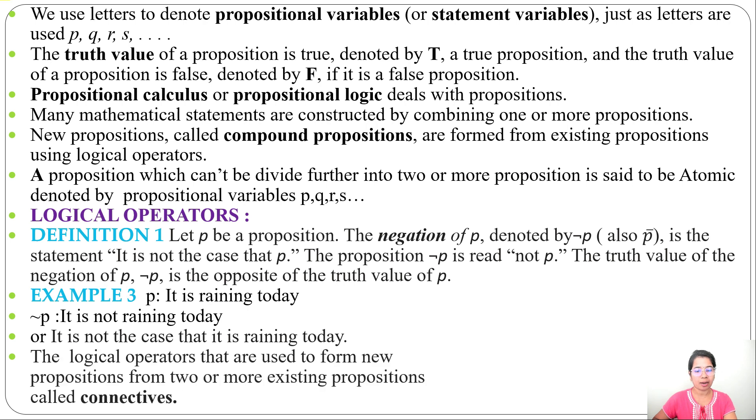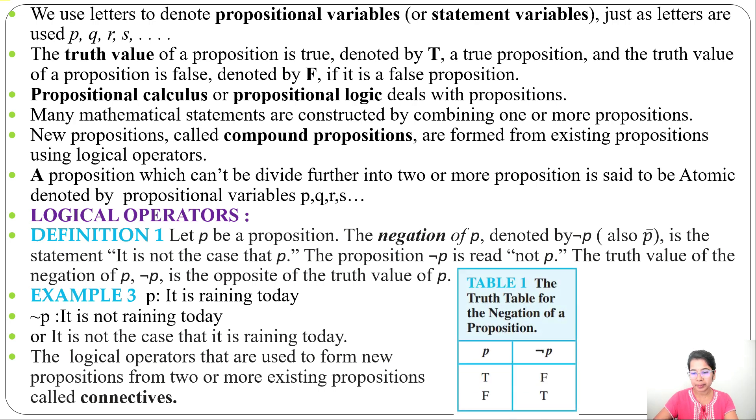There are some more logical operators that combine two or more existing propositions to form a new compound proposition - those are called connectives. Truth table of negation: for P value true, ¬P will be false; for P value false, ¬P will be true. In next lecture, I will discuss connectives like AND and OR. If today's lecture is helpful for you, please like, share and subscribe. Thank you.